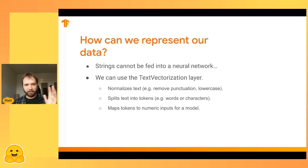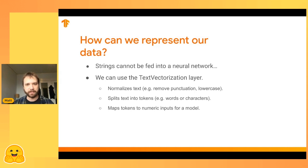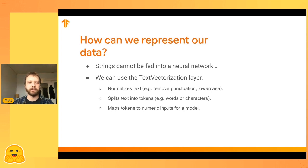After downloading the dataset, you immediately hit the NLP roadblock: how do we represent our data? You can't feed strings directly into a neural network, so you need some transformation of your input. One approach in Keras is the TextVectorization layer. It's a Lego block centered around working with text input. By default it has a normalization stage — removing punctuation and lowercasing — a splitting stage that splits on whitespace into words, and then maps string tokens to numeric inputs for your model.